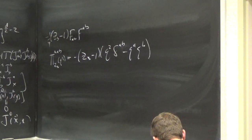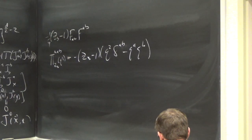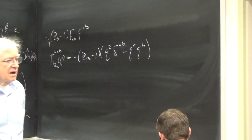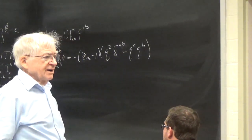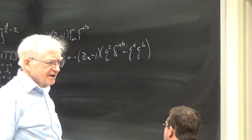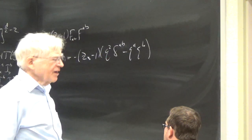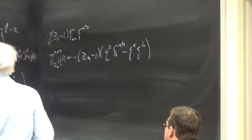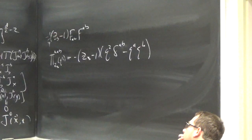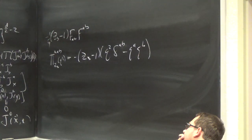[Student]: Why is gamma of 2 divergent? [Instructor]: It's 1 factorial — you're right, it's not gamma(2) that's divergent; it's gamma(0) which is divergent, because this term is gamma(2 − d/2), and when d = 4 that's gamma(0), which diverges. Thank you for that correction.